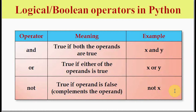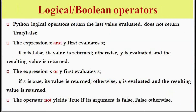Now let's see how these operators work on non-boolean values like strings, numbers, lists, tuples, and dictionaries. The key point is that Python logical operators return the last value evaluated — they do not return true or false. For the AND operation on expression x AND y, x is evaluated first. If x is false, that value is returned; otherwise y is evaluated and that resulting value is returned.